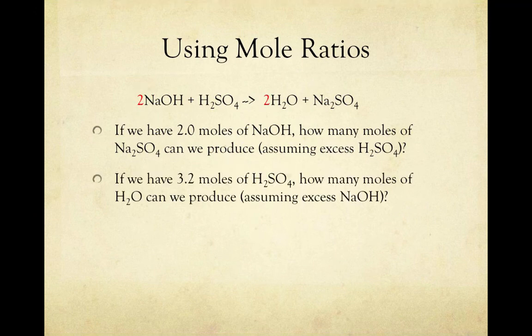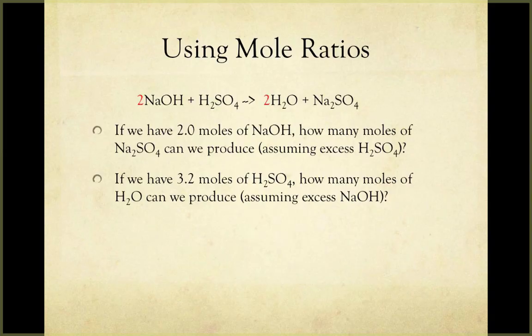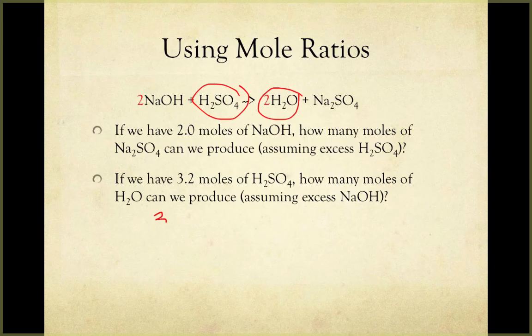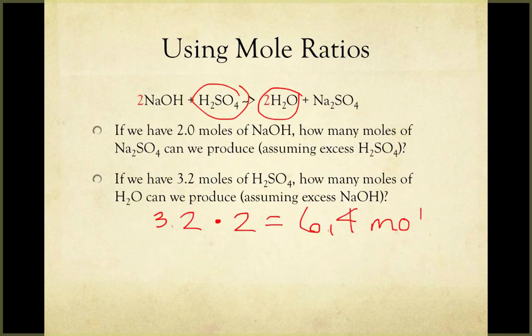Looking at a second example, if we have 3.2 moles of H2SO4, how many moles of H2O can we produce, assuming excess NaOH? So here, if we know that one mole of H2SO4 will produce two moles of water, then 3.2 moles of H2SO4 will produce twice as much water to give us 6.4 moles of water.